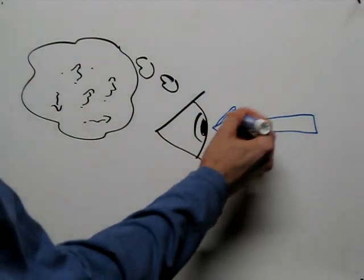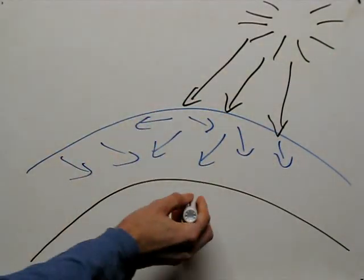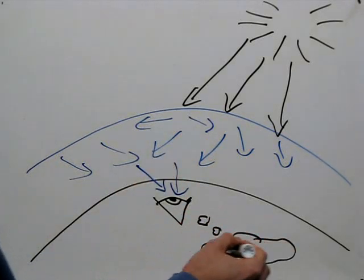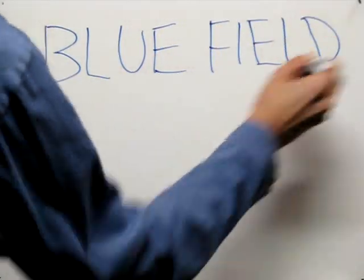So where can you get a source of blue light like this to stimulate your eye? The cool part is, it turns out that the light from our atmosphere, the sky, is close enough to the ideal color that if you look up into it, you will see these little tiny points of light. This is called the blue field entoptic phenomenon.